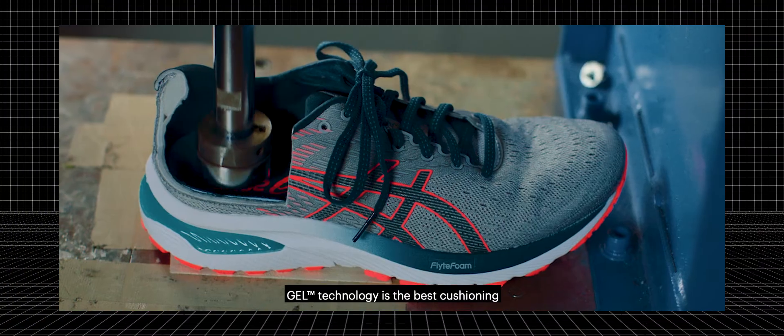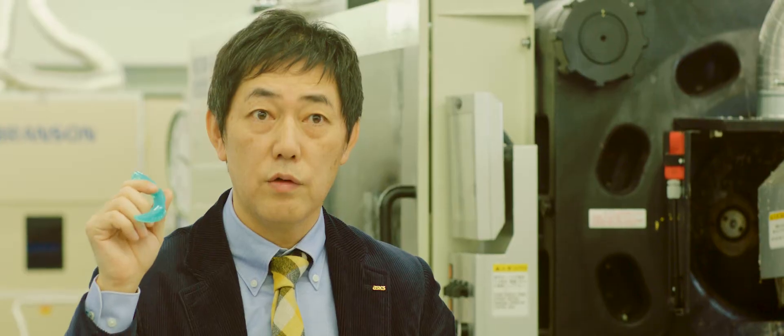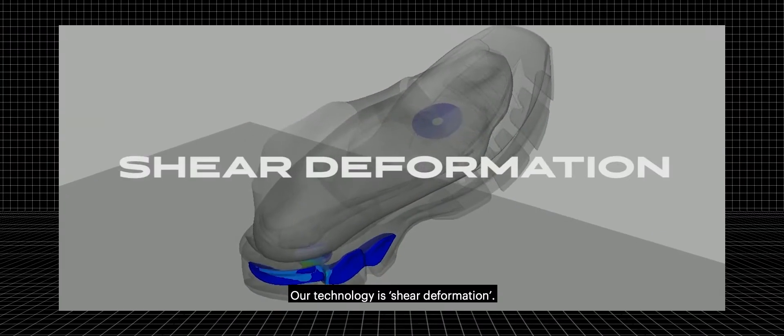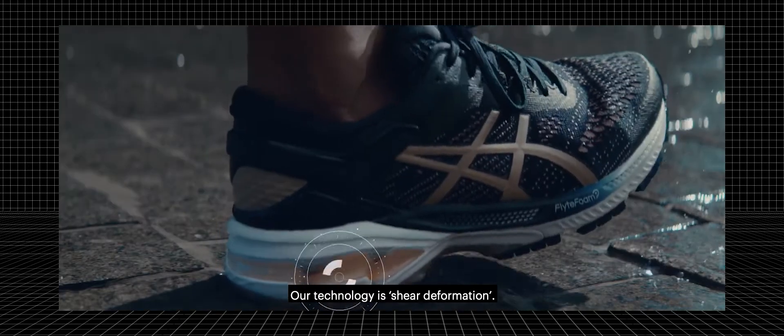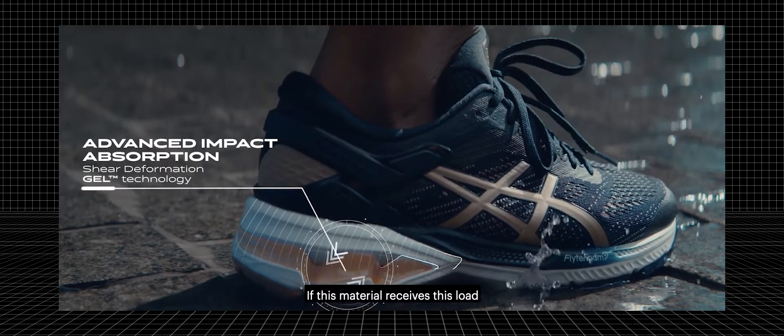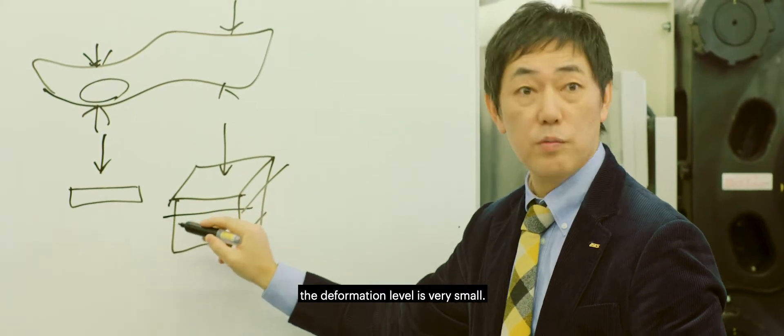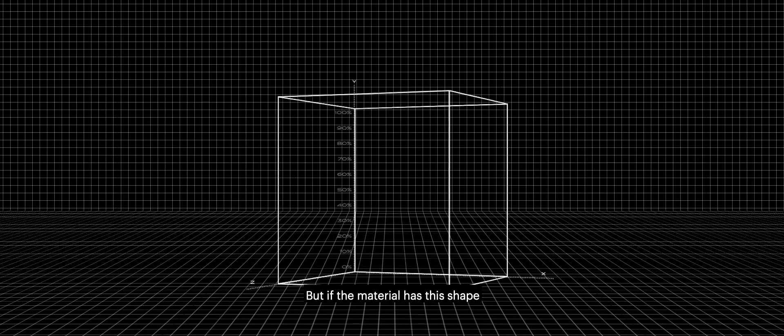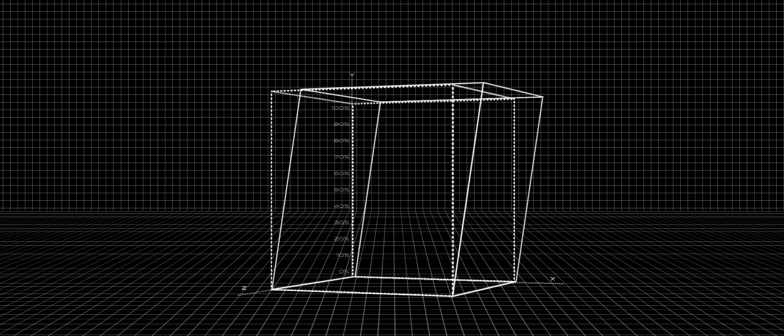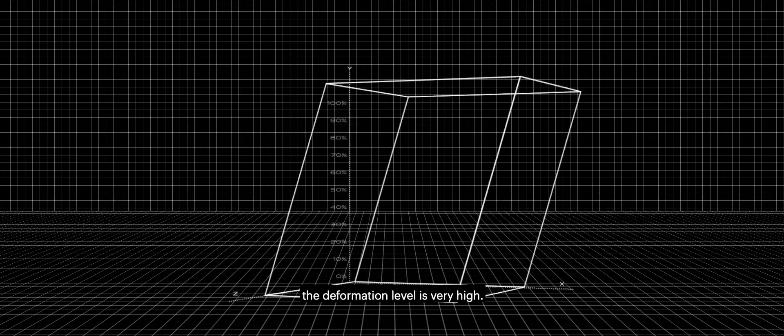Gel is the best cushioning for the shoes. Our technology is shear deformation. This material receives the load - the deformation level is very, very small. But if the material has this shape, the deformation level is very, very high.